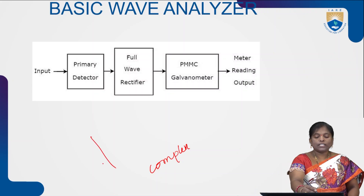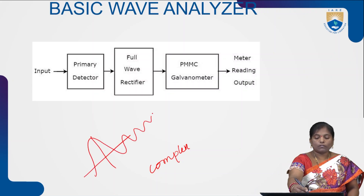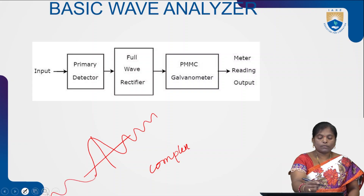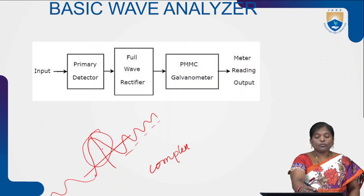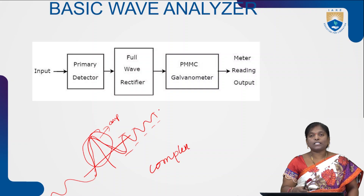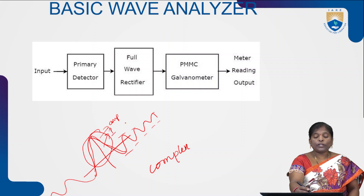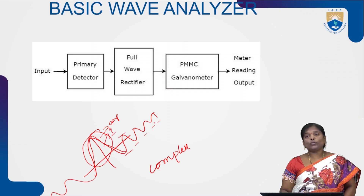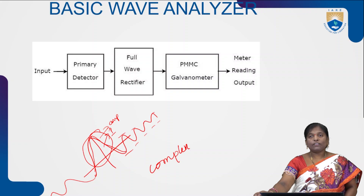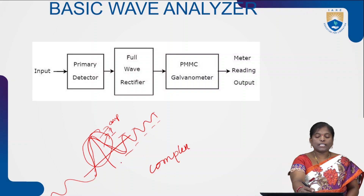Consider this waveform — it has a fundamental and its harmonics. The fundamental amplitude is different from the amplitude of its harmonics. To find out the response of the fundamental component and its harmonics, it is necessary to use wave analyzers. A wave analyzer analyzes the performance of a complex waveform which consists of fundamental components and its harmonics.